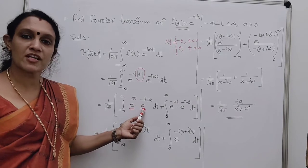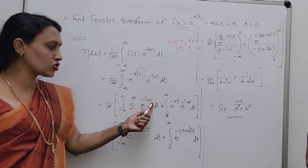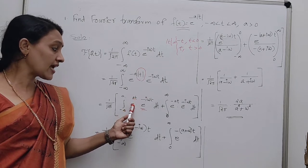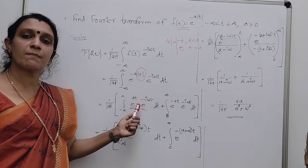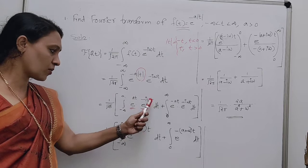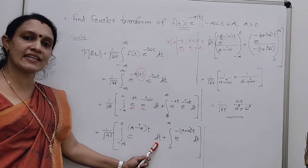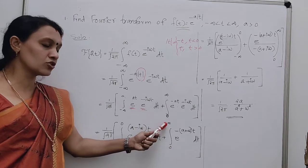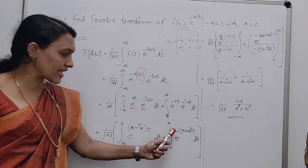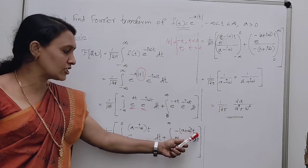Now we combine the exponential functions. Using a^m × a^n = a^(m+n): the first integral has e^((a - iω)t) dt, and the second integral has e^(-(a + iω)t) dt. Both are prefixed by (1/√(2π)).